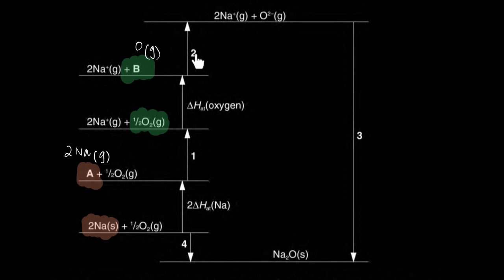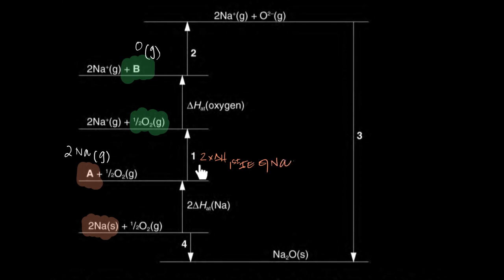Now they want you to label reactions one through four. Reaction number one is after atomization of sodium: two sodium gaseous atoms become two sodium gaseous ions. Sodium to sodium gaseous ions is the first ionization energy of sodium, but since there are two of them, it's two times the first ionization energy of sodium.